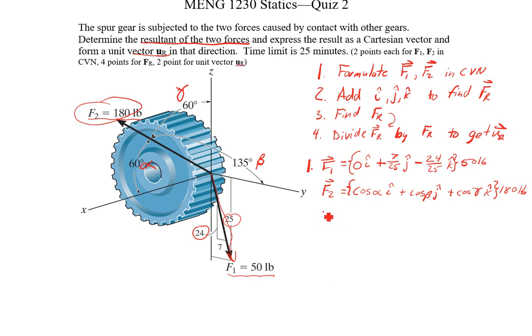So continuing on, F2 with numbers is cosine of 60 degrees in the I plus cosine of 135 degrees J. And if we're looking at F2, we can see that 135 degrees from the Y axis will be in the negative direction. Cosine is positive from 0 to 90 and negative from 90 to 180, and then again in the third quadrant it's negative, and the fourth quadrant is positive. So this should work out to what we expect. And then we're going to add plus cosine 60 degrees K hat all times 180 pounds.